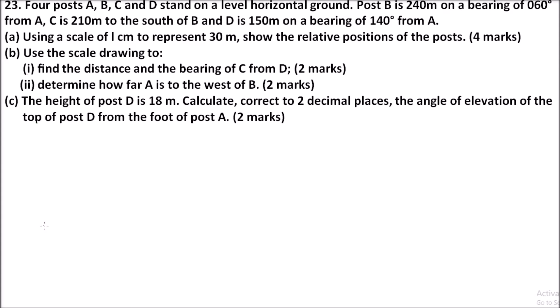We start from A. We make a compass there. And we are told B is 240 meters on a bearing of 60, so it means here we have angle 60. Since it is 240, you divide by 30, you make 8 centimeters, and this is where we have our point B.